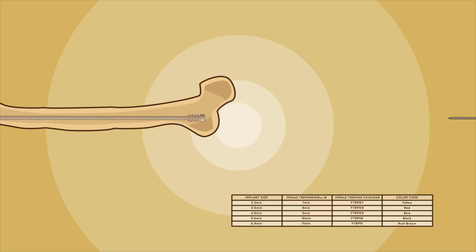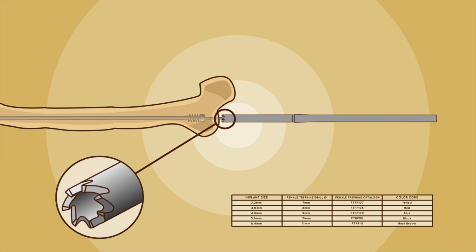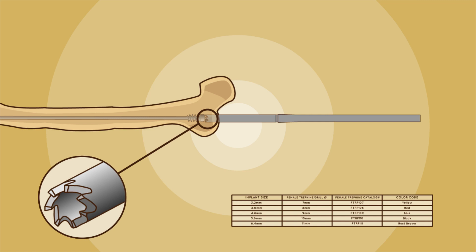First, advance a guide wire in the bone all the way in the cannulation of the female component to guide the female trefine. Then, the female trefine can be used manually or on power to clear a path for the female component.